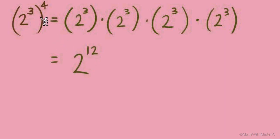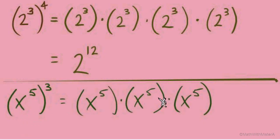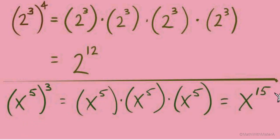Do we begin to see another pattern here in terms of what an exponent outside of parentheses does? Let's look at another example with variables: x to the 5th to the 3rd power. Writing it in expanded form, this is x to the 5th multiplied over and over 3 times. Since it's all multiplication, we can add the exponents: 5 plus 5 is 10, and 10 plus 5 is 15.